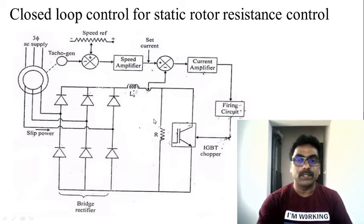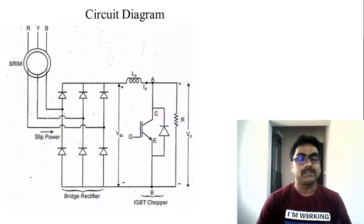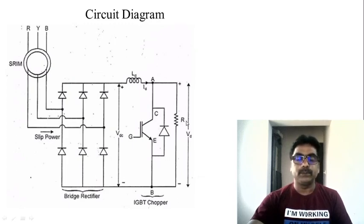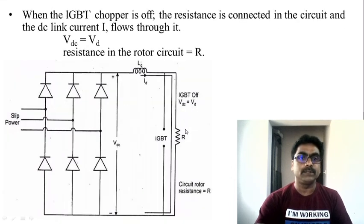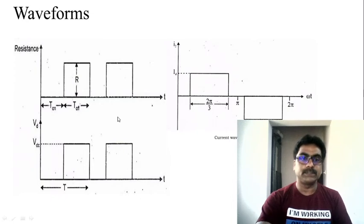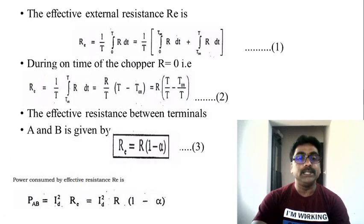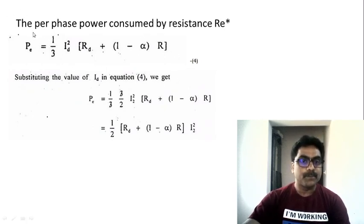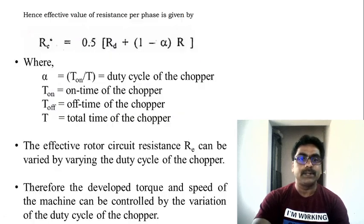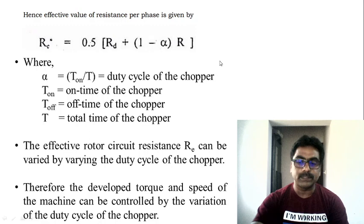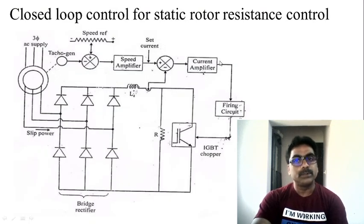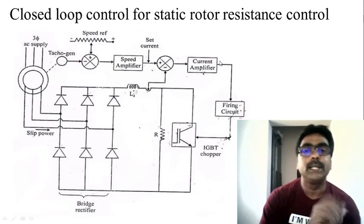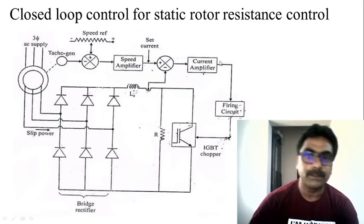This is all about static rotor resistance control. In quick review: the circuit diagram shows that when the switch is OFF, effective resistance equals R, and when ON, it equals zero. The waveforms present voltage, current, and resistance. We derived the effective resistance between terminals A and B, calculated the effective resistance per phase using power and current equations, and covered the closed-loop control. If I missed or misinterpreted anything due to being in a hurry, please bear with me. Thank you.